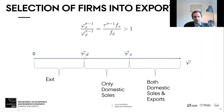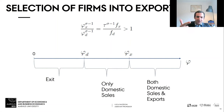This assumption determines the selection of firms. From zero to phi_d — the domestic productivity cutoff — firms exit, as in the closed economy. If your productivity is between phi_d and phi_x, you only sell domestically. Since phi_x is greater than phi_d, if your productivity is higher than phi_x, you sell domestically and export. We make this assumption because the data shows that exporters are the largest and most productive firms with the highest value added per worker. The most productive firms export, the least productive exit, and those in between sell only domestically.